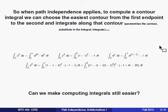It seems that when path independence applies, to compute a contour integral, all we need to do is choose the easiest contour possible, from the first endpoint to the second, and then integrate along that contour. Now in all the examples we've done so far, we have parameterized the contour, we've made the substitution, we've integrated.